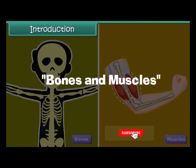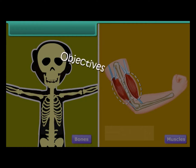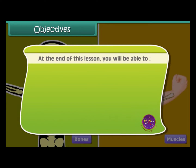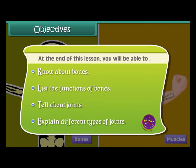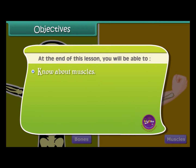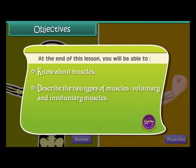Bones and Muscles. Objectives: At the end of this lesson, you will be able to: know about bones, list the functions of bones, tell about joints, explain different types of joints, know about muscles, describe the two types of muscles — voluntary and involuntary muscles — and discuss the functions of the muscles.